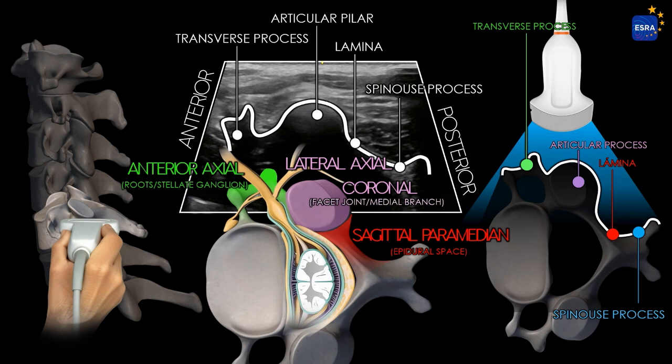The transverse process is seen anteriorly as a hyperechoic bright structure with posterior acoustic shadowing. It may show one or two prominences corresponding to the anterior and posterior tubercles, depending on the cervical level. The articular pillar, zygapophysial joint, can be identified as a rounded hypoechoic structure with posterior shadowing in the central part of the image. Laminae appear as hyperechoic lines extending from the articular pillar toward the transverse process, forming the roof of the vertebral canal. The spinous processes are the posterior continuation of each lamina, ending in two bony prominences corresponding to the posterior tubercles.